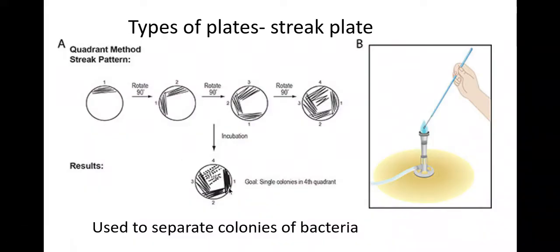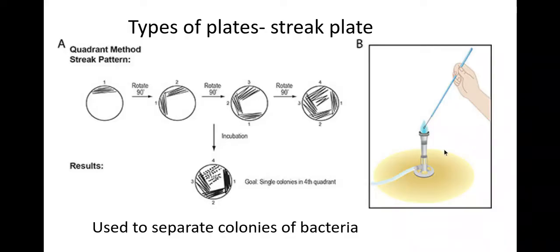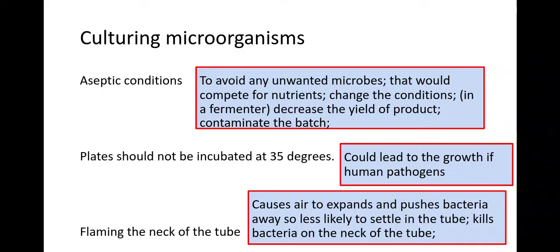The last method is the streak plate, used to separate and isolate colonies of bacteria so you can pick one up for further experiments or sampling. First, dip your inoculating loop into your sample and scrape it gently across one side of the plate. Sterilize the loop, then touch one part of what you've already done and drag it across the plate again. Sterilize again, then repeat for a third section. After incubation, on the final section you will get single colonies forming, which you can use for further experiments.